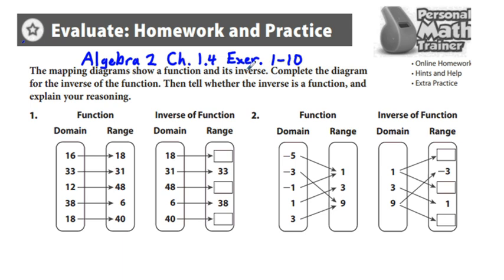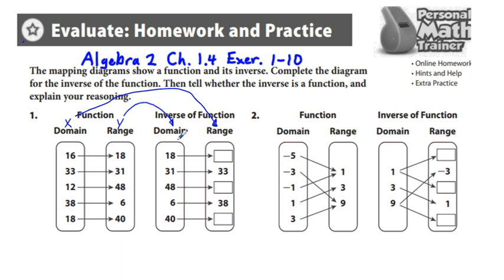Problems 1 and 2: the mapping diagram shows a function and its inverse. Complete the diagram for the inverse of the function, then tell whether the inverse is a function and explain the reasoning. In inverses of functions, the x's become y's and the y's become x's. So the y in the range of the original function becomes the x value or domain in the inverse. We have an x value of 16 with a corresponding output value of 18; for the inverse function, we're going to have an output value of 16 — the x's and y's simply switch.